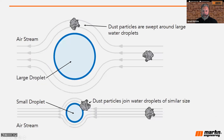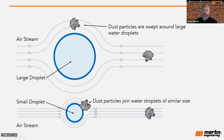If the water droplet is too large and the dust is too small, the airstream tends to just push that dust particle around the water particle, like you see in the diagram at the top. This is very, very common — we see this all the time in our studies.